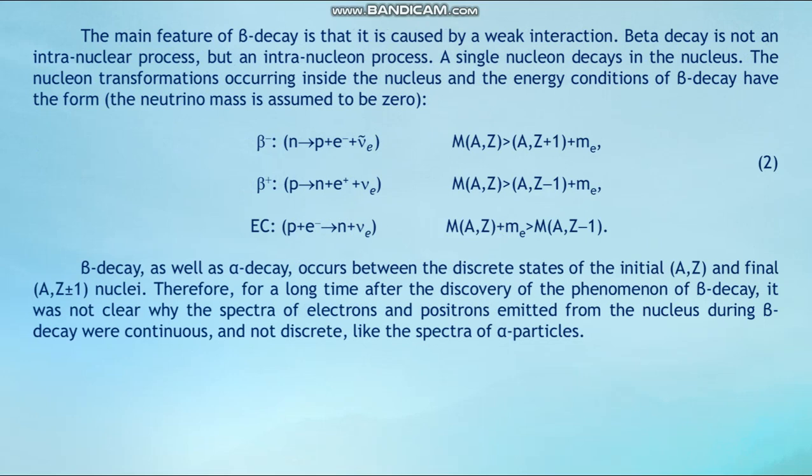The main feature of beta decay is that it is caused by a weak interaction. Beta decay is not an intranuclear process but an intranucleon process — a single neutron decays inside the nucleus. The energy conditions of beta decay involve beta minus decay and beta plus decay, with the neutrino mass assumed to be zero.